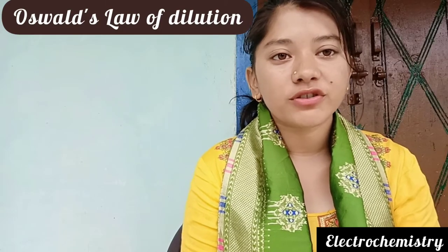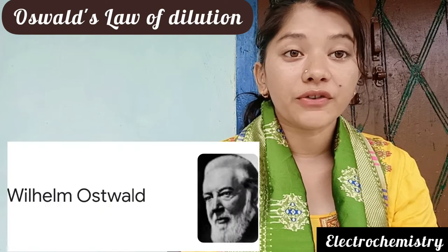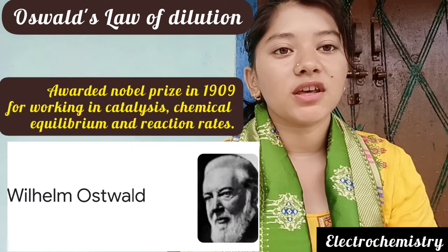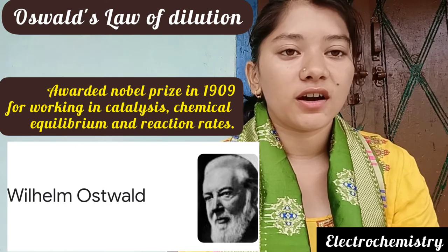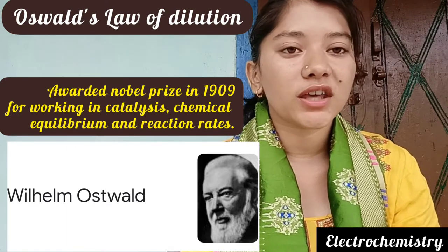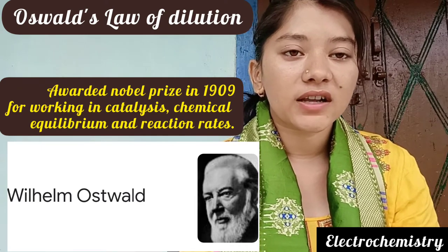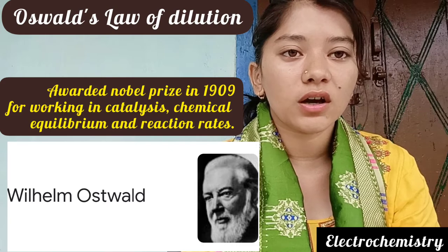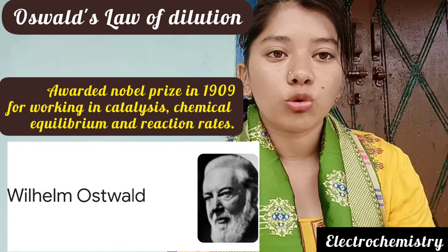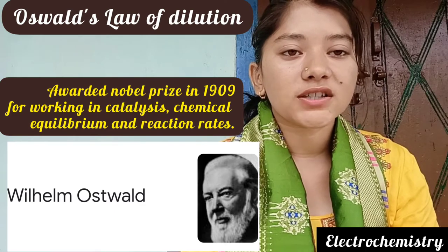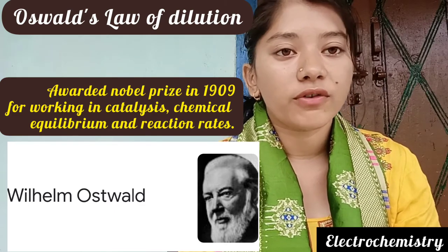Hello. We are going to do Ostwald's Law of Dilution. Ostwald is a famous German chemist who received the Nobel Prize in 1909. The reason was his contributions to chemistry in different areas: surface chemistry, chemical kinetics, and electrochemistry. He gave us the law of dilution.